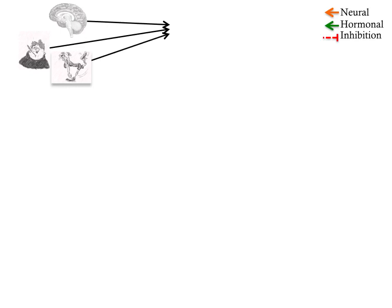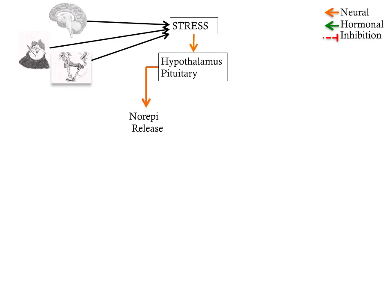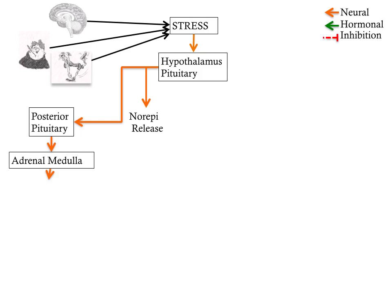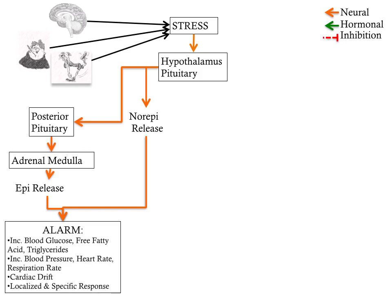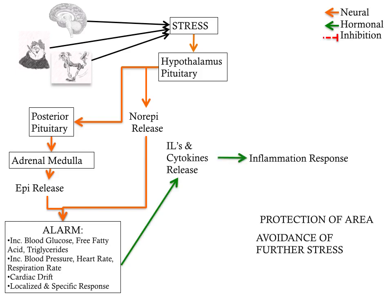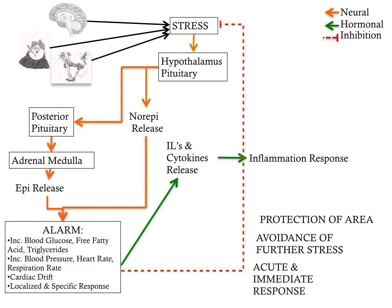We have a stress — and we can't distinguish whether it's coming from the brain, from a pathogen, or from physical stress imposed on the body. This causes the hypothalamus to release norepinephrine and to stimulate, via the posterior pituitary, the adrenal medulla to release epinephrine. This triggers the alarm response, which mobilizes glucose for immune cells, mobilizes free fatty acids and triglycerides for other tissues, and changes cardiovascular and respiratory responses. The alarm phase is localized and specific, attempting to protect the stressed area or lead to avoidance of further stress. It is acute and immediate, and the inflammatory response is minimal.